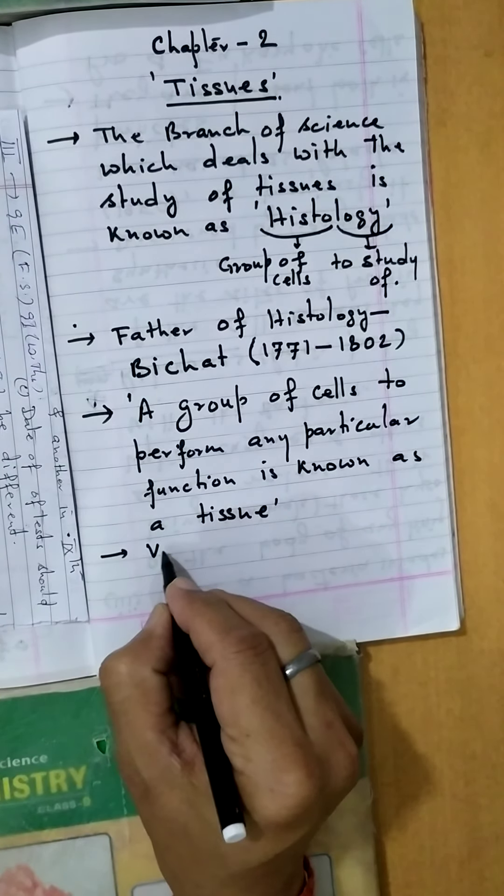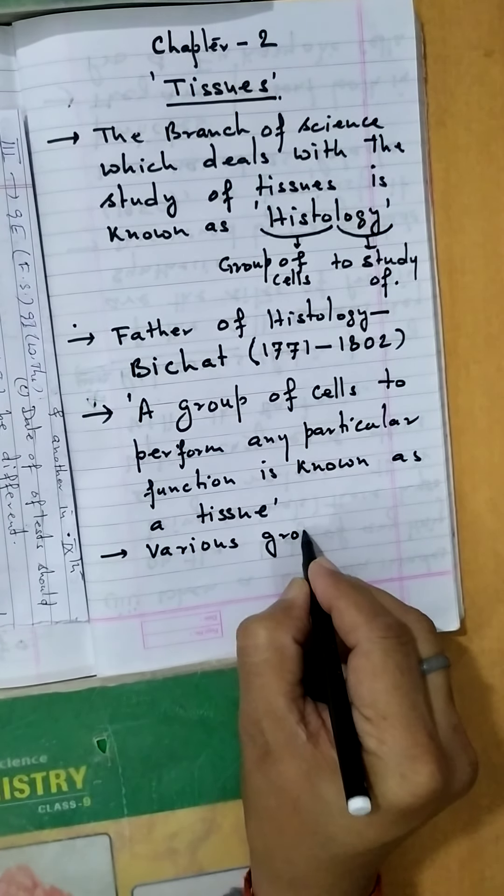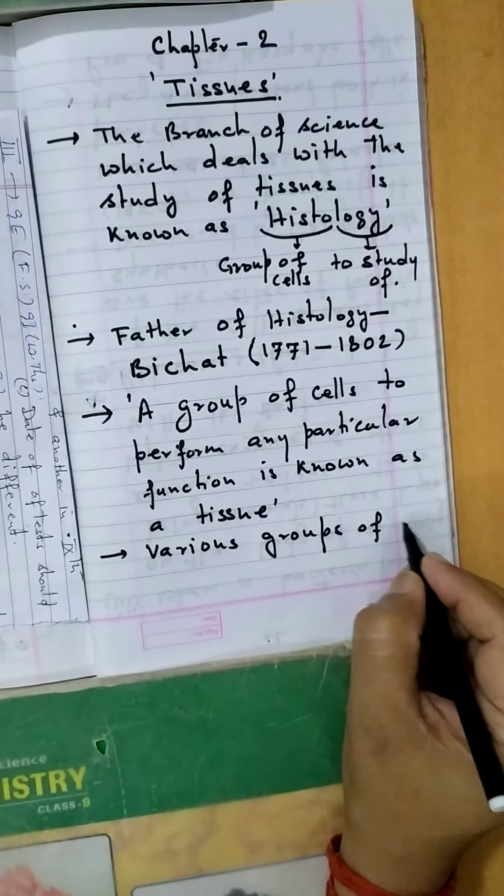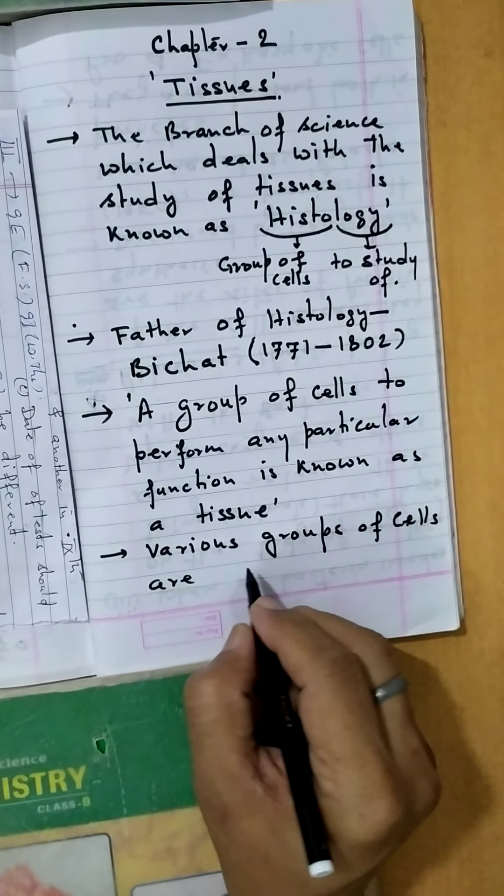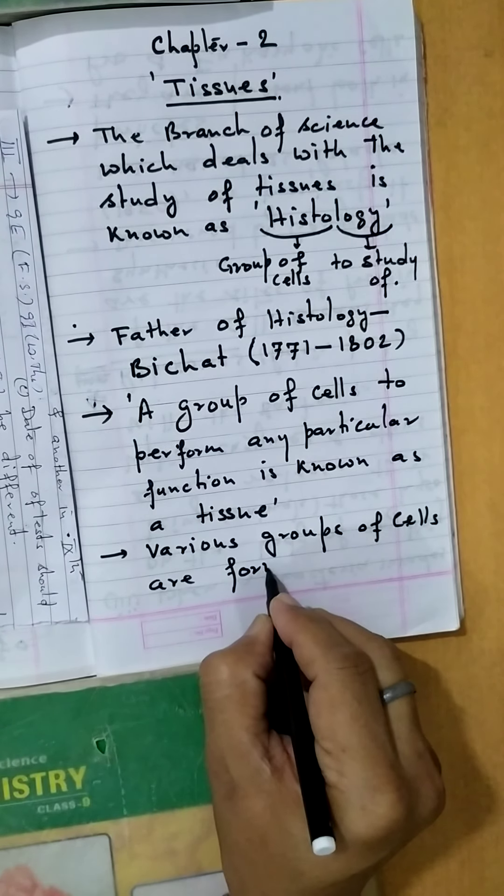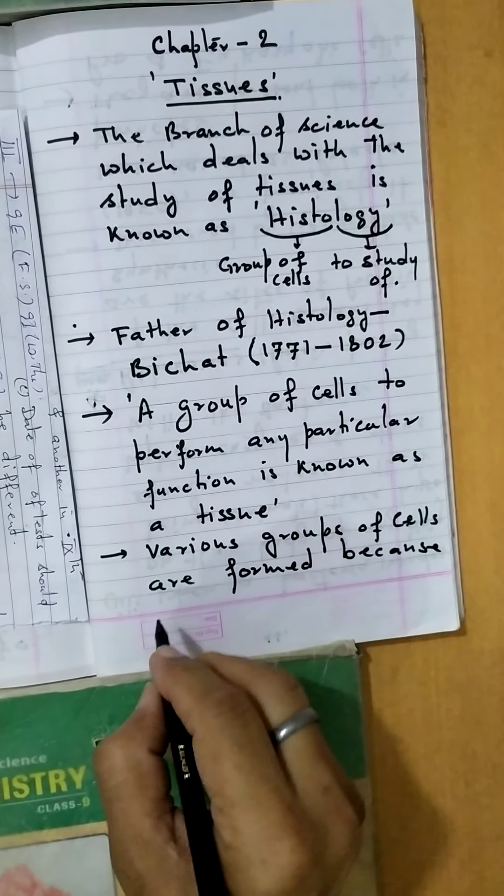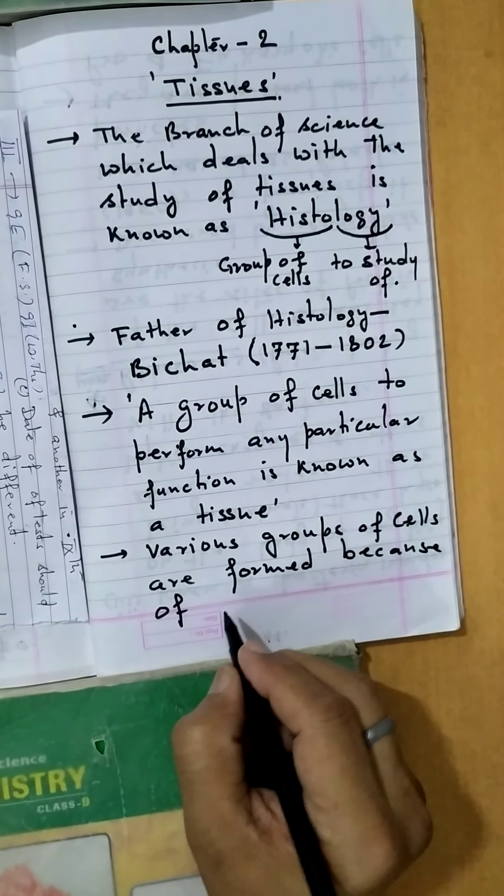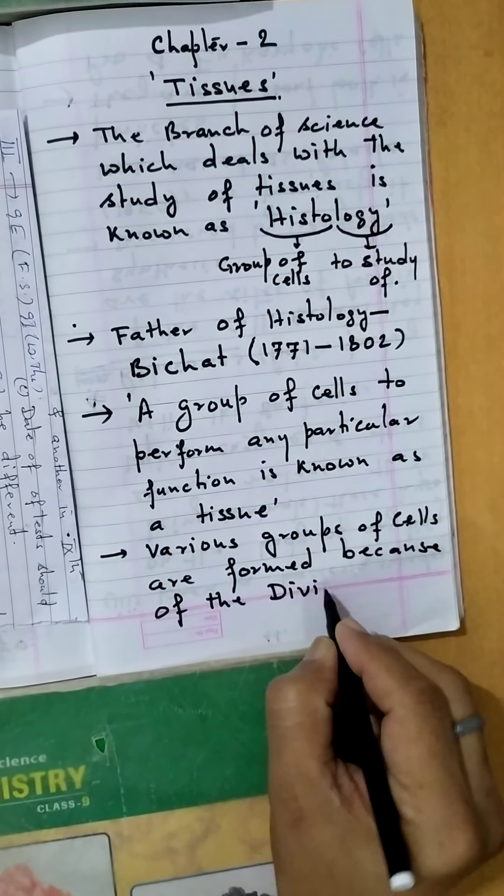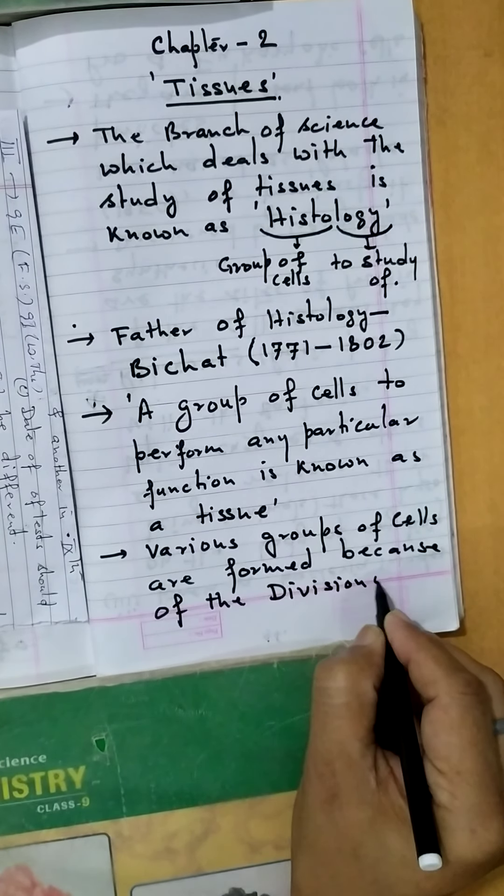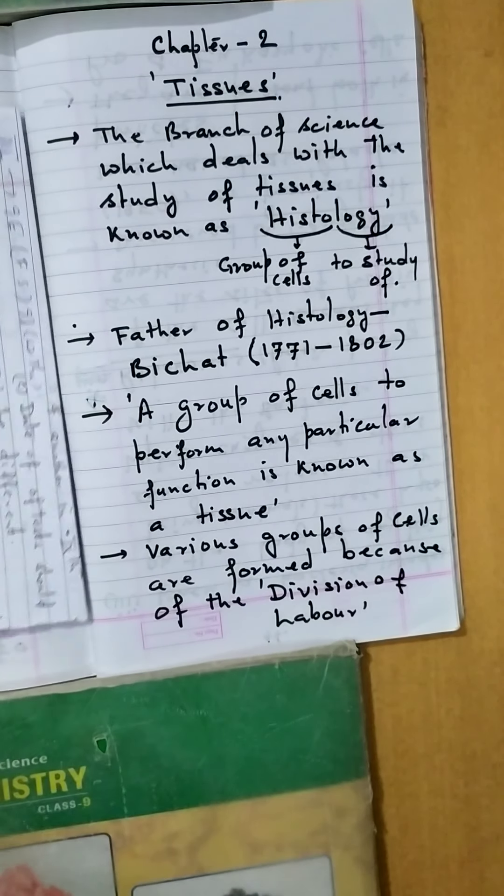The various groups of cells are formed because of the division of labour. Now what is division of labour?